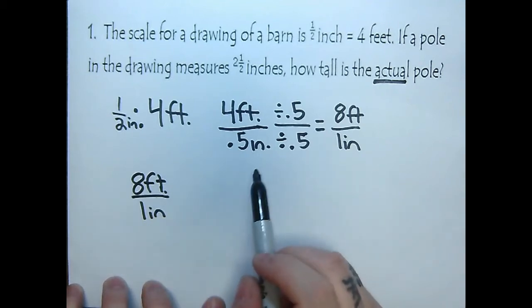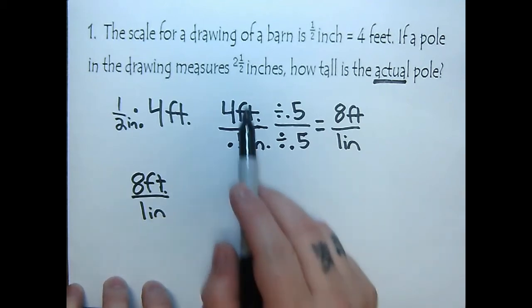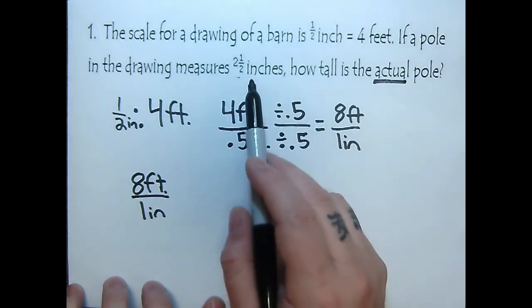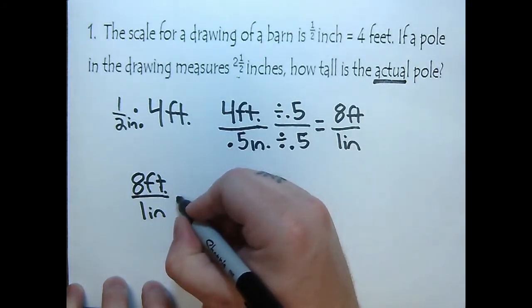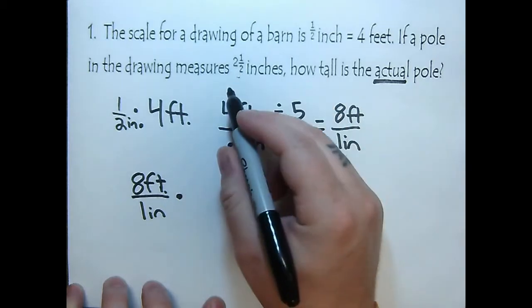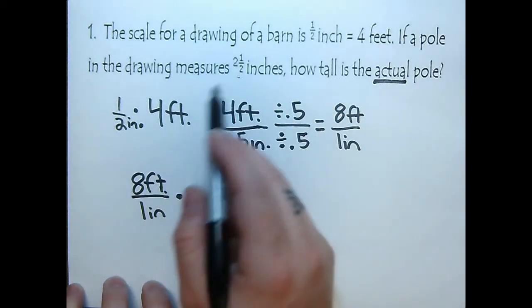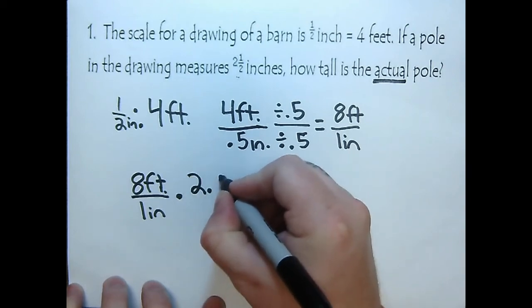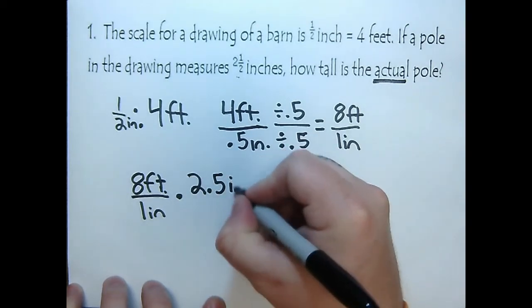I'm going to rewrite that down here so we can continue. So eight feet to one inch. Now what I need to do is just multiply that by my drawing size, because we've created a ratio drawing to actual. So I need to put my drawing, so this is going to be multiplied by my drawing of two and one half. And the same thing, I'm going to use 0.5 for one half. So instead of two and a fraction, I'll say 2.5 inches.